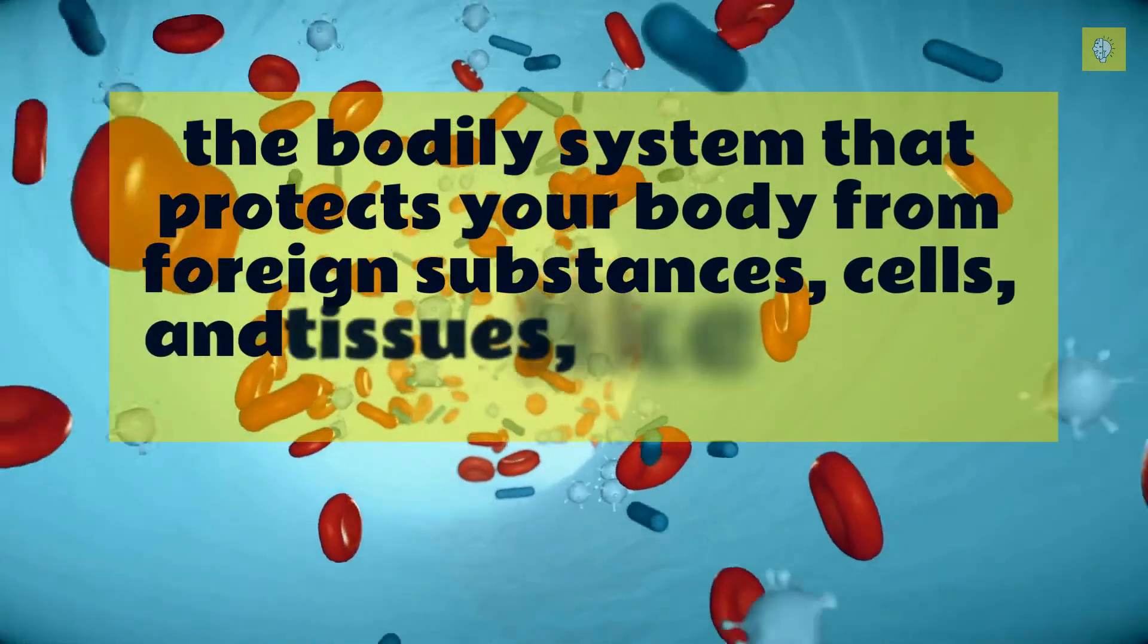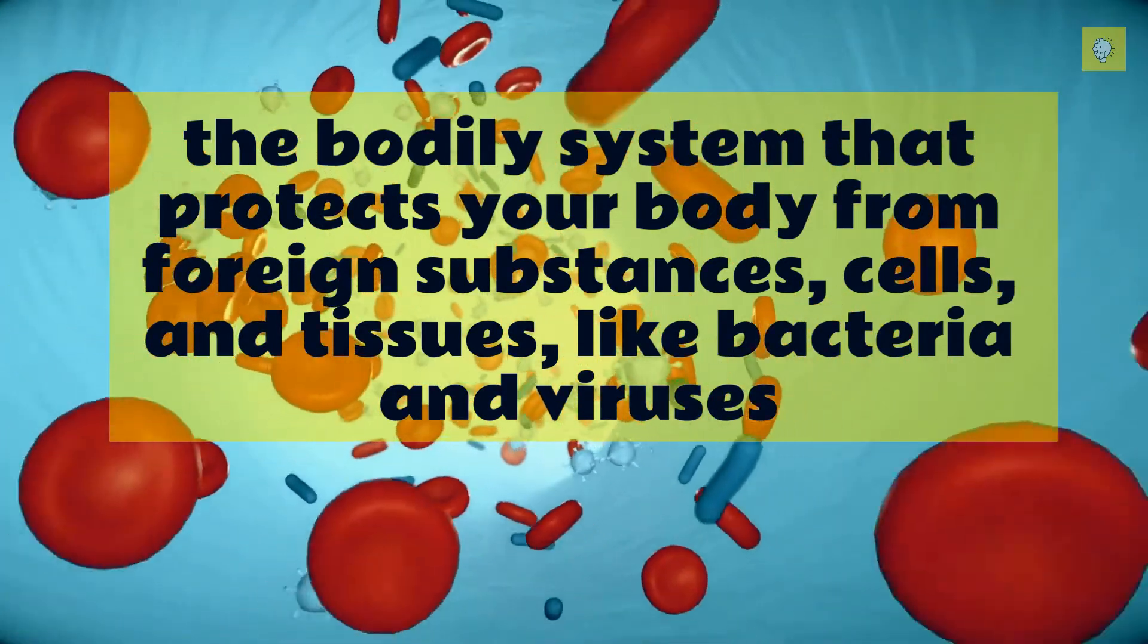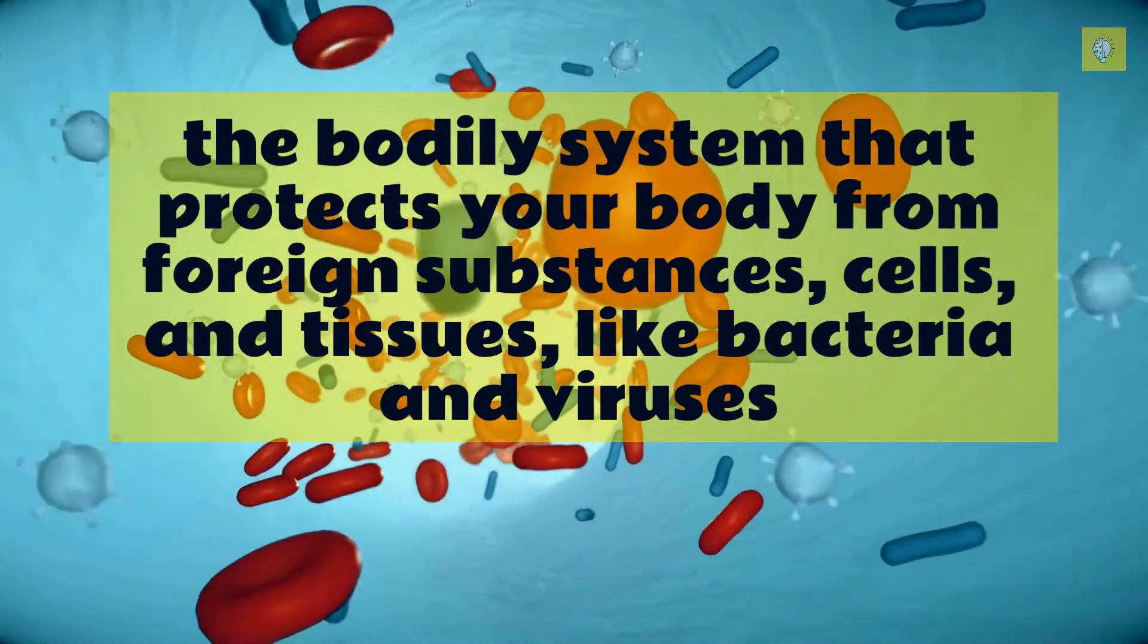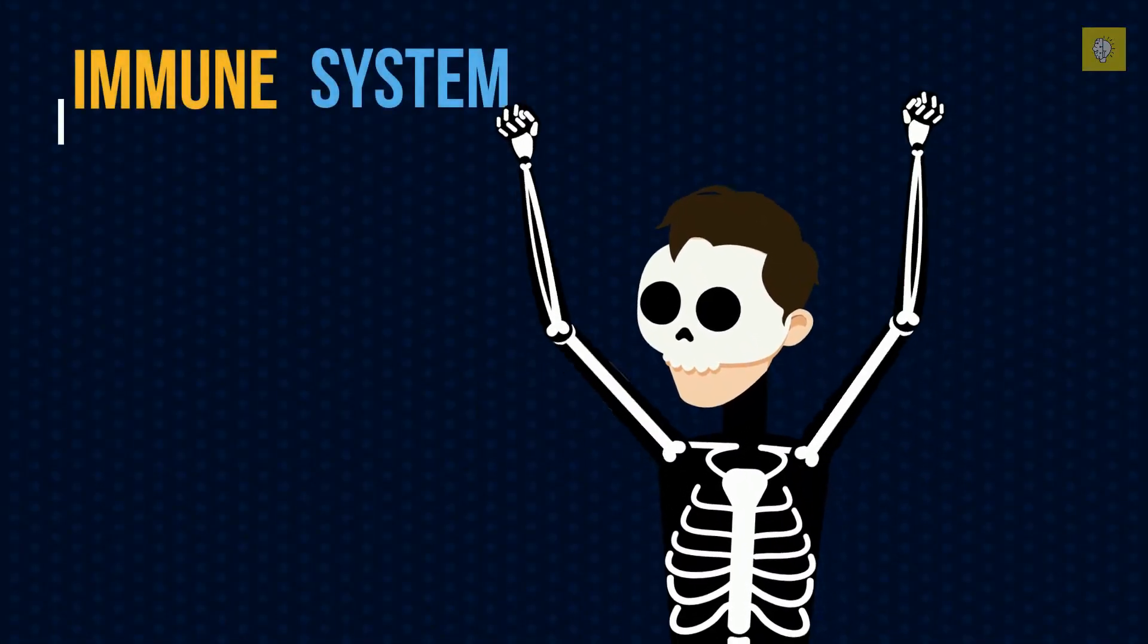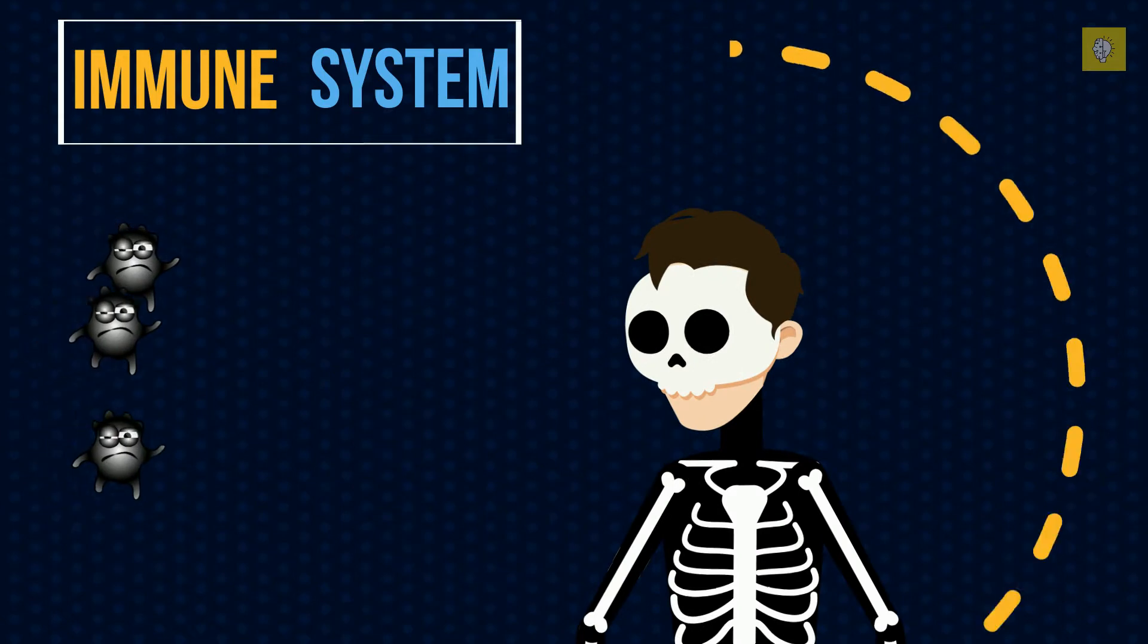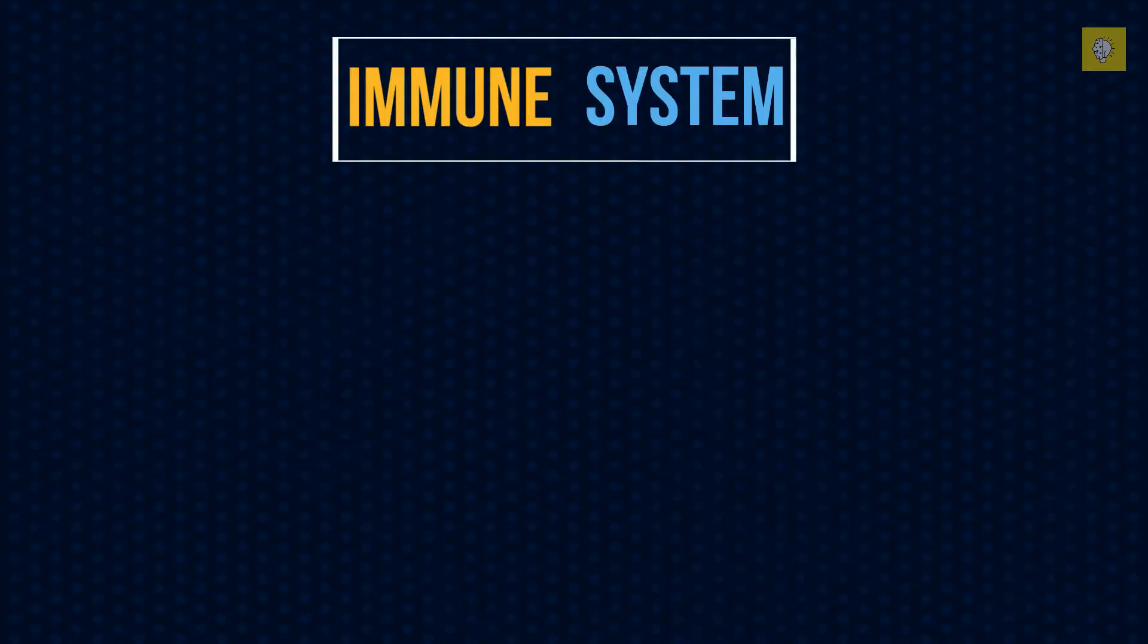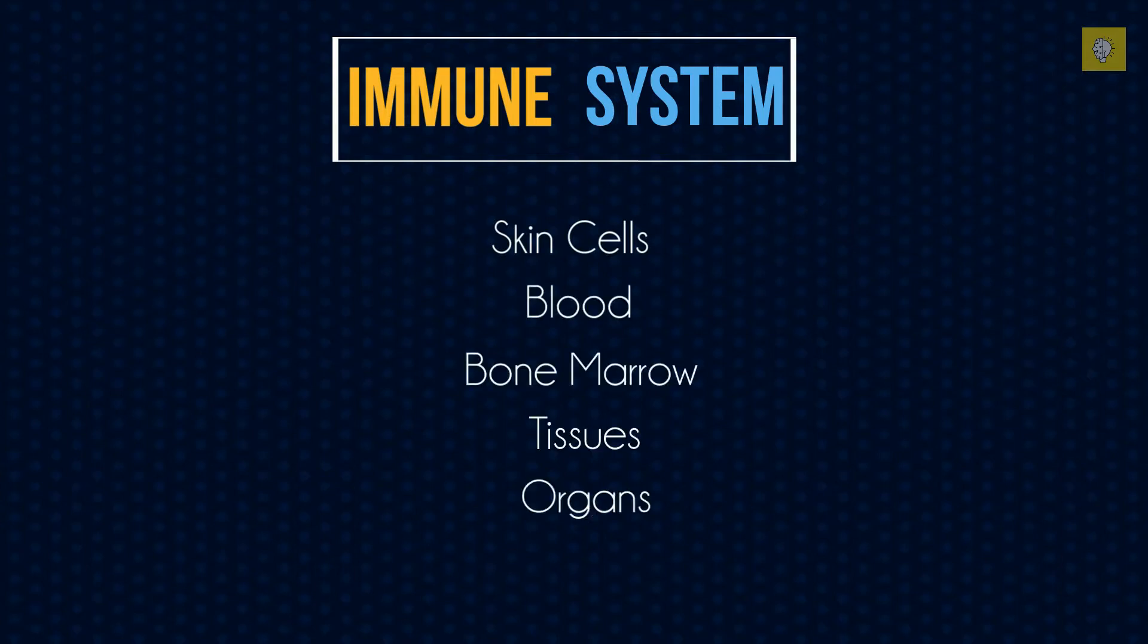So the immune system is basically defined as the bodily system that protects your body from foreign substances, cells and tissues like bacteria and viruses. Simply put, it's your immune system's job to defend your body against illness and disease. The complex system is made up of cells in your skin, blood, bone marrow, tissues and organs that protect your body against potentially harmful pathogens like bacteria and viruses and limit the damage from non-infectious agents like sunburn or cancer.